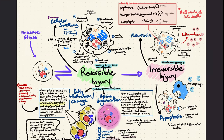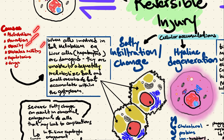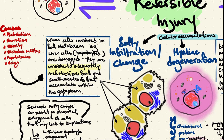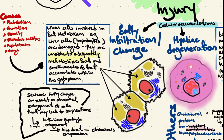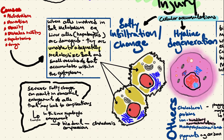Another hallmark of reversible injury is intracellular accumulations, and an excellent example is fatty change. When cells involved in fat metabolism — for example liver cells — are damaged, they are unable to adequately metabolize fat, so fat accumulates within the cells. Causes of damage to liver cells include alcoholism, starvation, obesity, diabetes mellitus, liver toxins, or drugs. Mild fatty change may have no effect on cellular function, but severe fatty change can result in abnormal enlargement of cells. For example, if liver hepatocytes enlarge, they may compress surrounding bile ducts, leading to cholestasis.